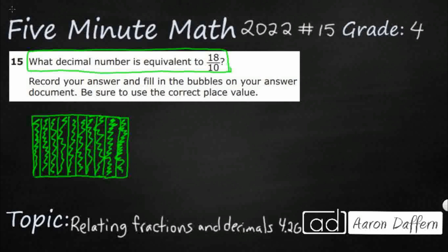So we've got ten-tenths. If I wanted to relate this to a fraction, it's pretty easy — I've got ten pieces out of ten total pieces, so that's ten-tenths. How do I make that as part of a decimal number? Well, think of this as one whole. I've broken it up into ten pieces, but basically I've shaded in the whole thing. So if I've got ten-tenths, that's going to equal one whole. I've shaded in the entire thing.